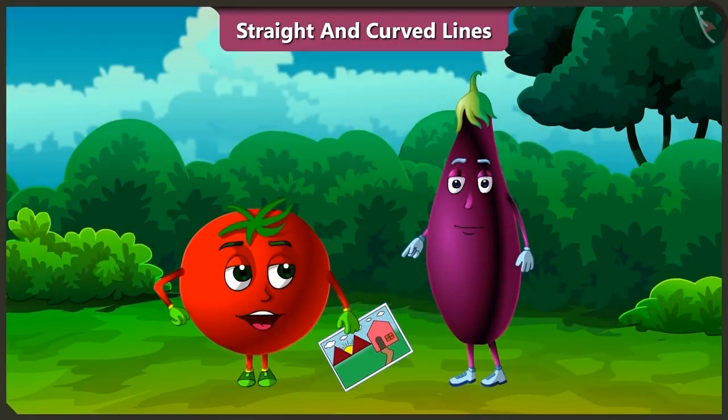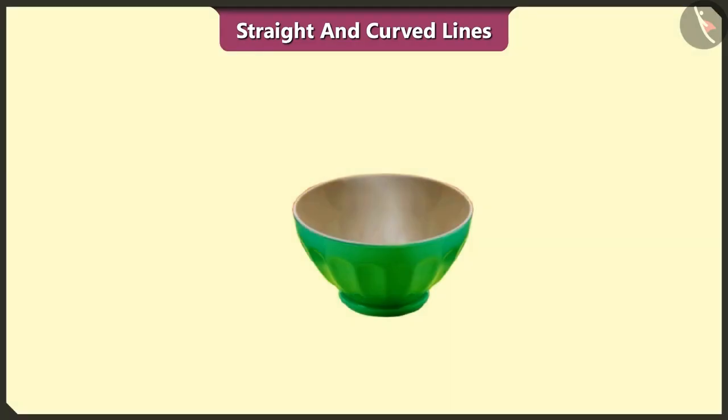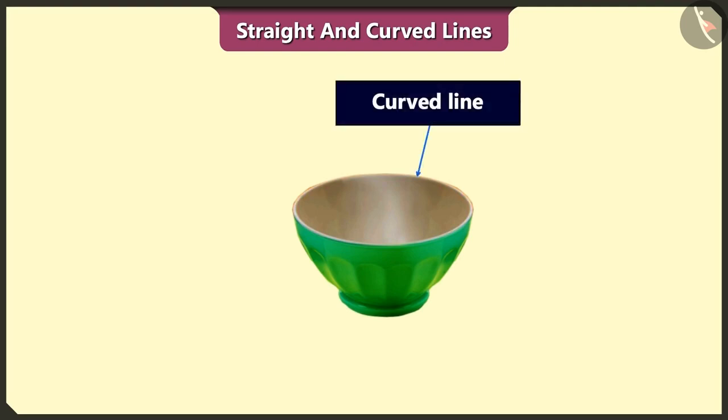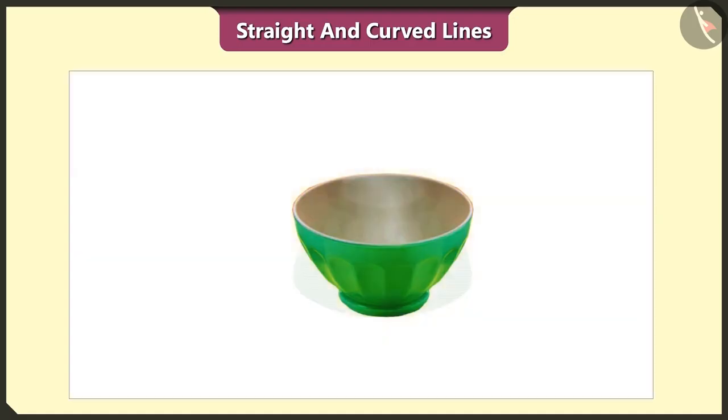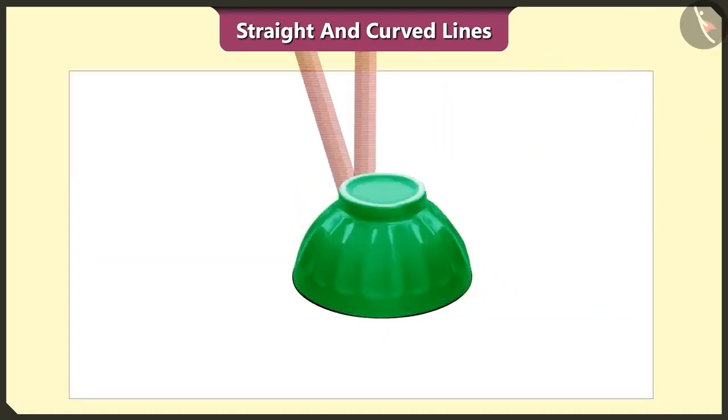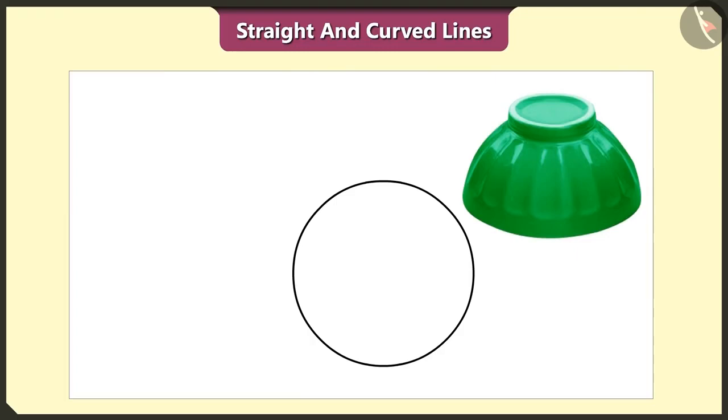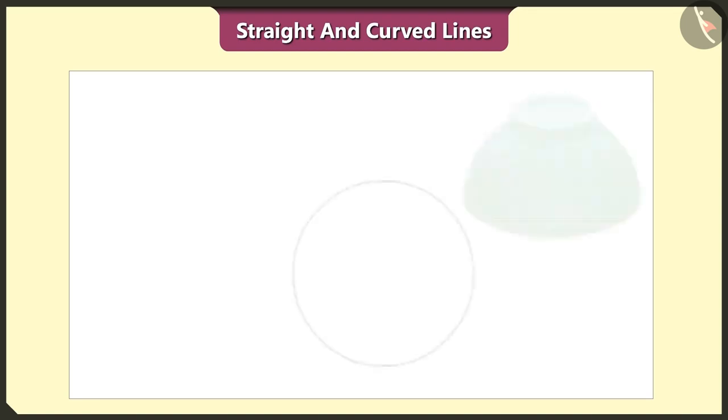Bingu, can we see straight lines and curved lines in objects other than drawings? Yes, we can see them in various objects around us. Look, this part of the bowl is made up of curved line. If we place this bowl upside down and trace it, we get a circle. The circle is also made up of curved line.